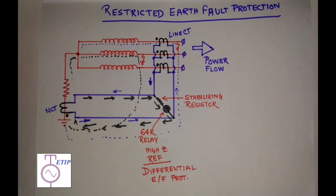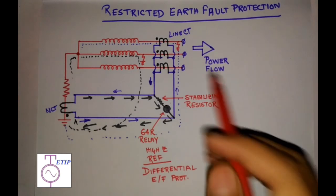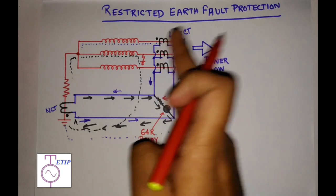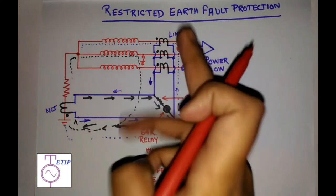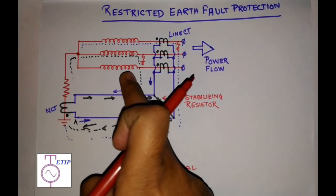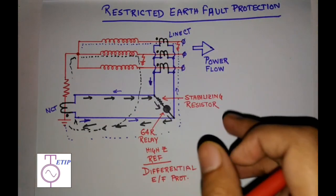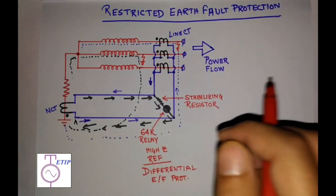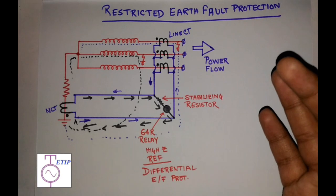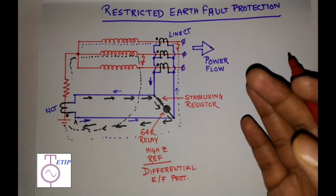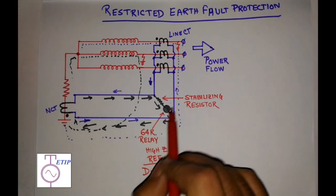This is the basic principle of restricted earth fault protection. Any earth fault outside this zone will not be sensed; any earth fault inside this zone will be sensed. This is the main philosophy behind restricted earth fault protection.